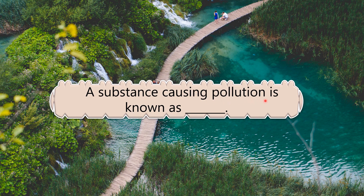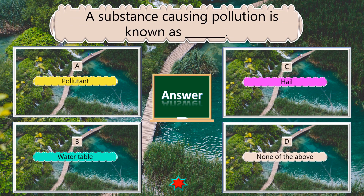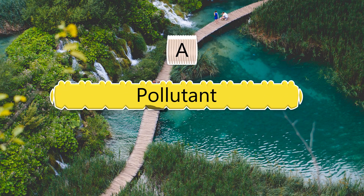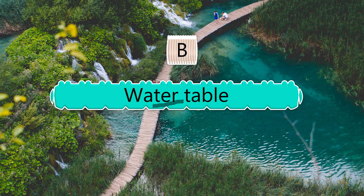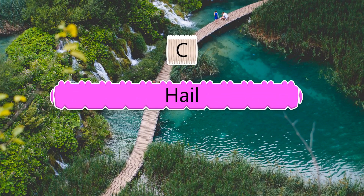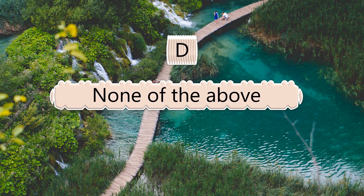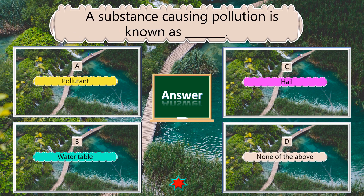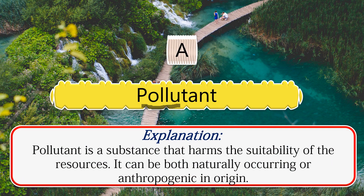A substance causing pollution is known as what? The answer is pollutant. A pollutant is a substance that harms the suitability of resources.